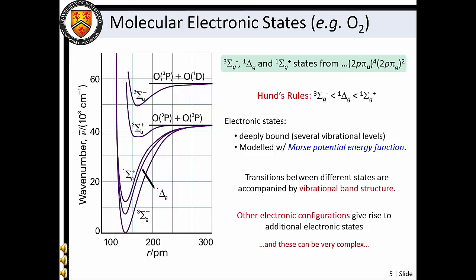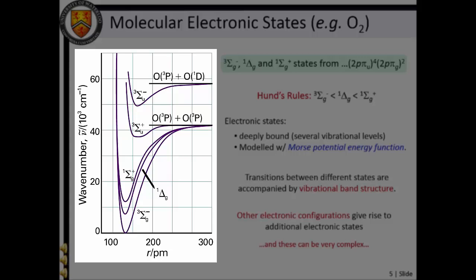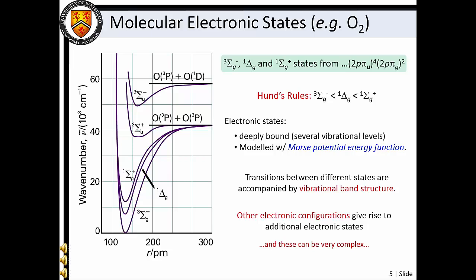In Masterclass 5, we learned about molecular orbital theory and found that electronic configurations give rise to specific sets of quantum numbers, each of which can be summarized with a term symbol. For example, the ground state electronic configuration of molecular oxygen yields triplet sigma g minus, singlet delta g, and singlet sigma g plus terms, which have that energetic ordering based on Hund's rules. A potential energy curve diagram of molecular oxygen is shown on the left. We see that all three of these states are deeply bound by tens of thousands of wavenumber, and that the shapes of their potential energy curves are reminiscent of the Morse potential that we discussed in Masterclass 8.